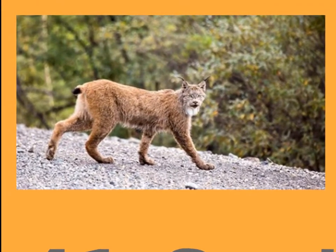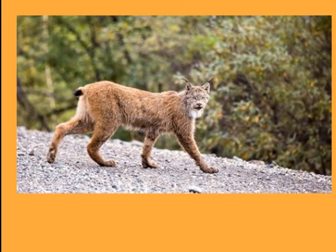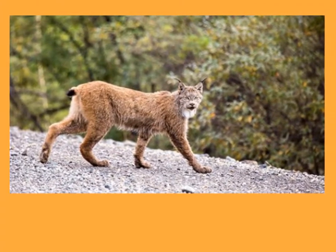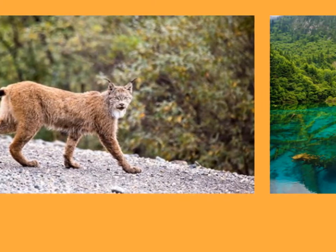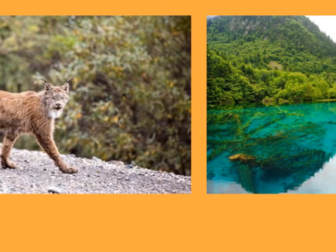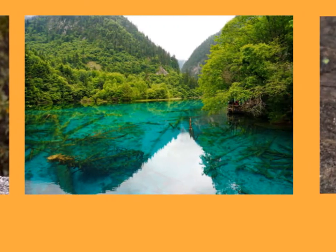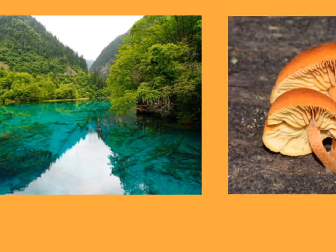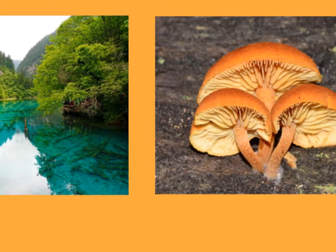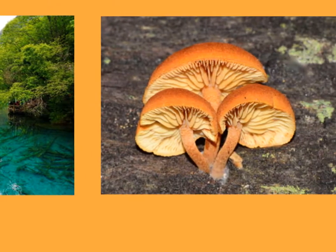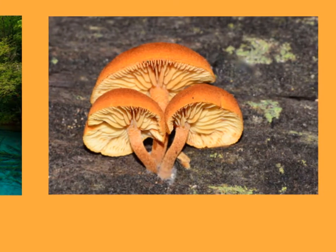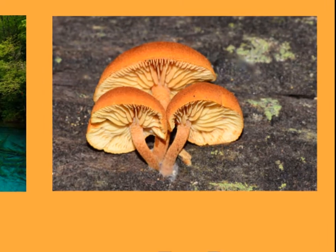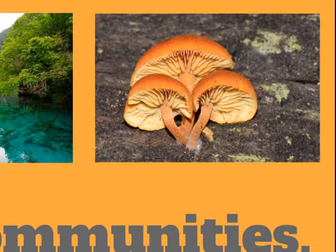Here are some terms that you will come across: producer, consumer, predator, prey, herbivore, carnivore, omnivore, detritivore, scavenger, autotroph, heterotroph, saprotroph, species, population, community, ecosystem, biotic, abiotic — and it goes on.